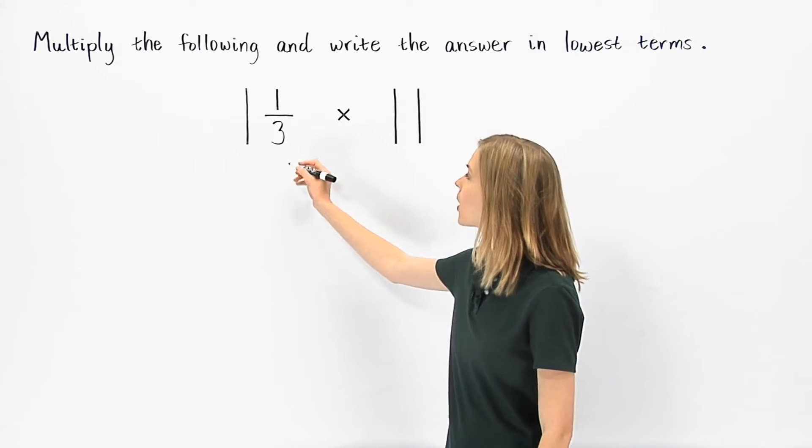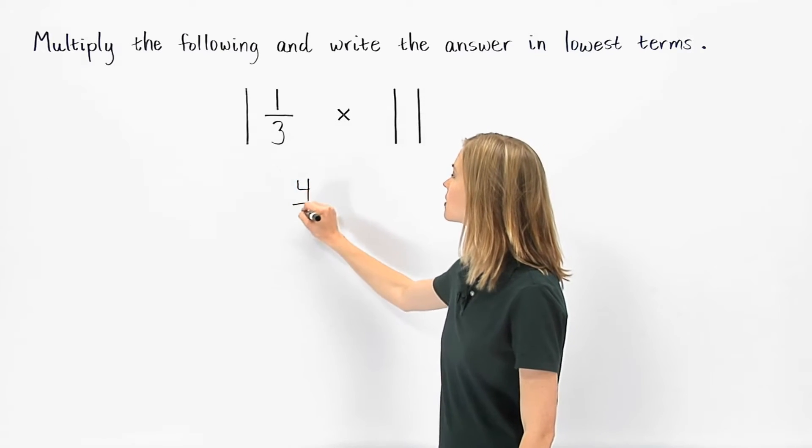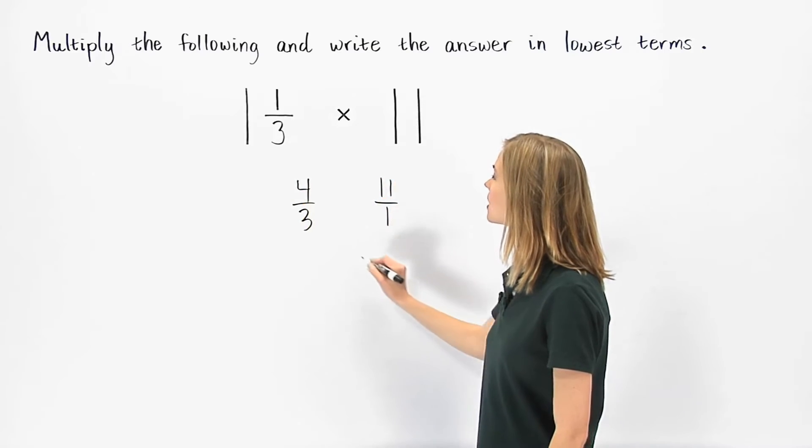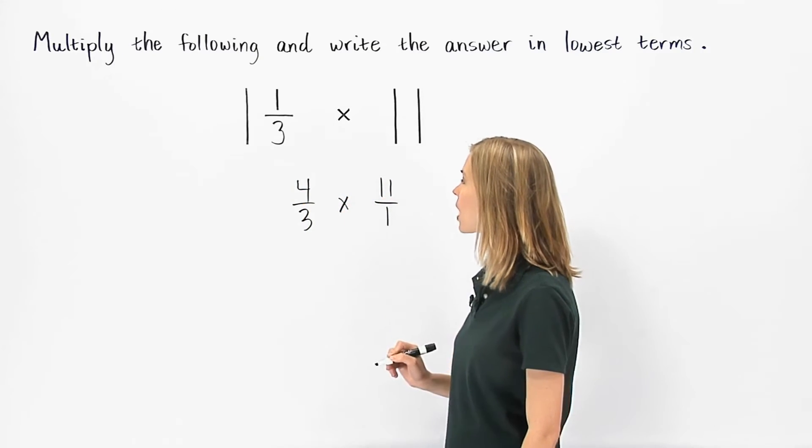So here, we write 1 and 1 third as 4 thirds, and 11 as 11 over 1. So we have 4 thirds times 11 over 1.